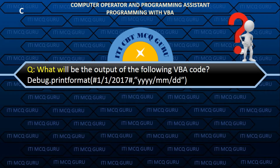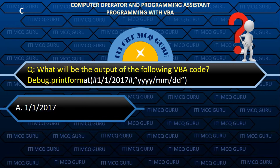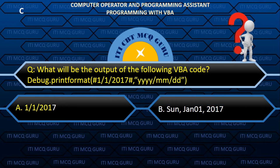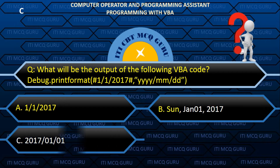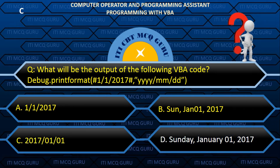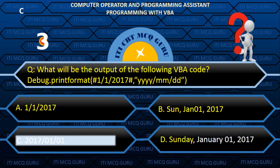What will be the output of the following VBA code? Answer: C. 2017/01/01.